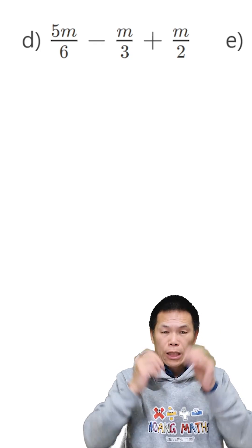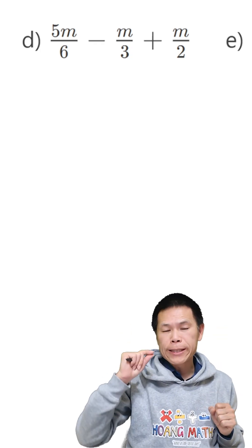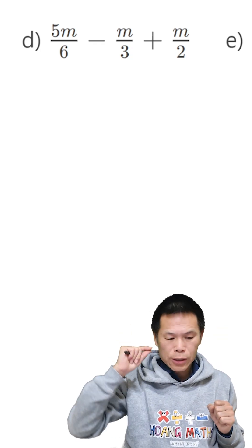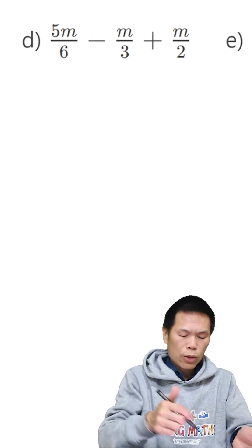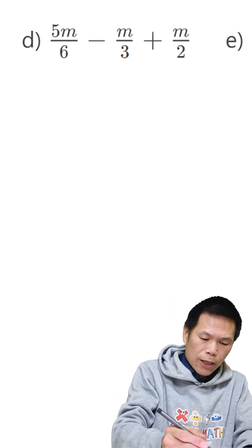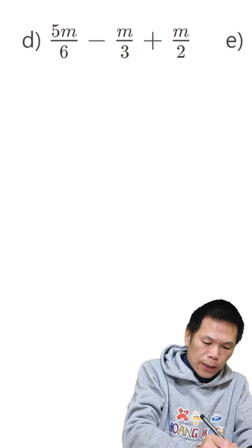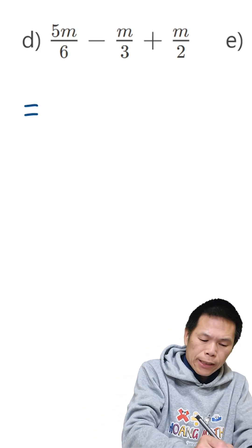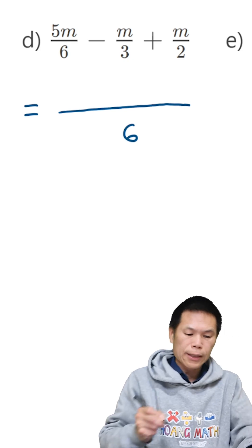So part D, the lowest common denominator is 6, because 6 is a multiple of 3 and 2. So let me write this down. So the answer is equal to 6.